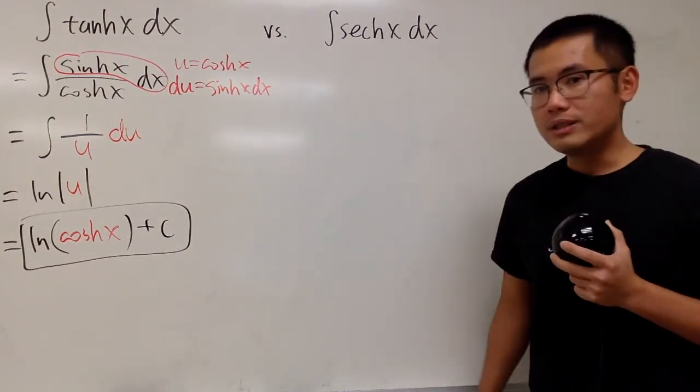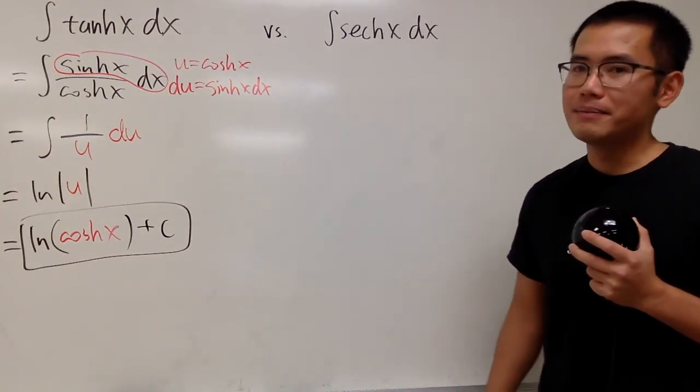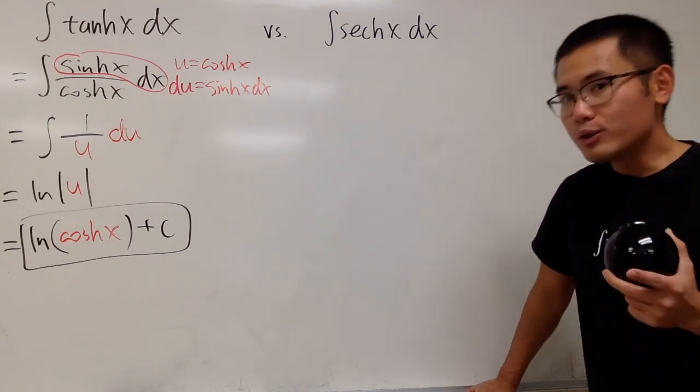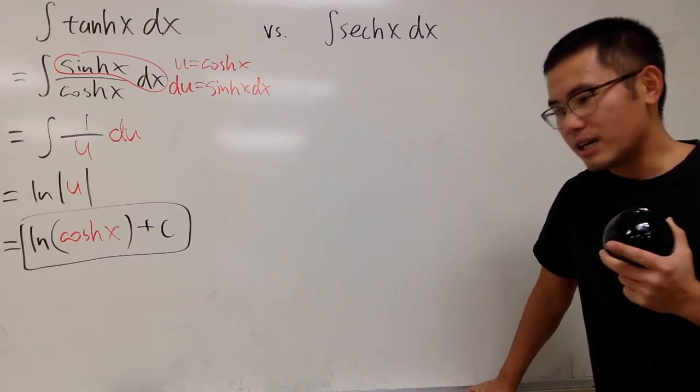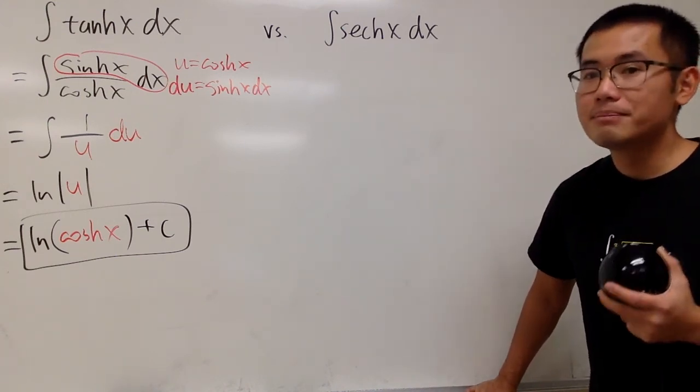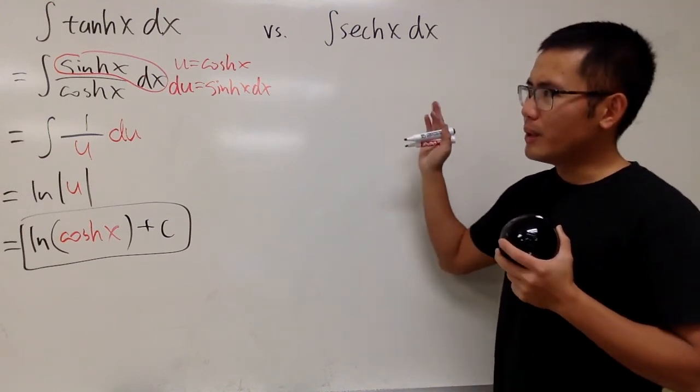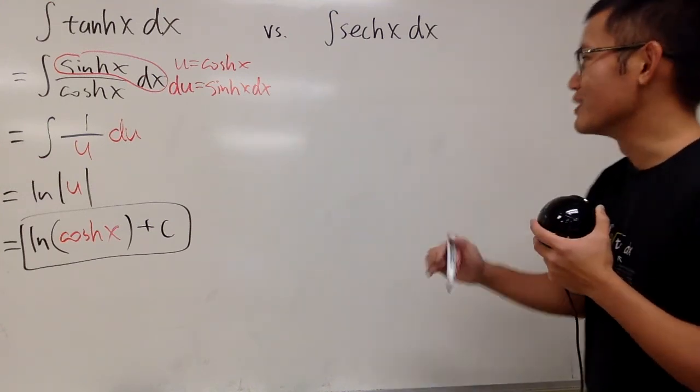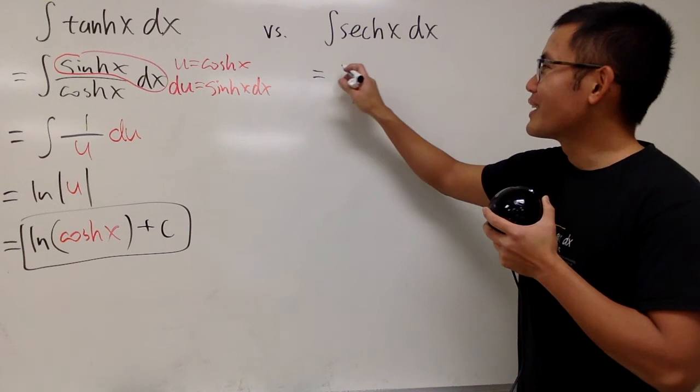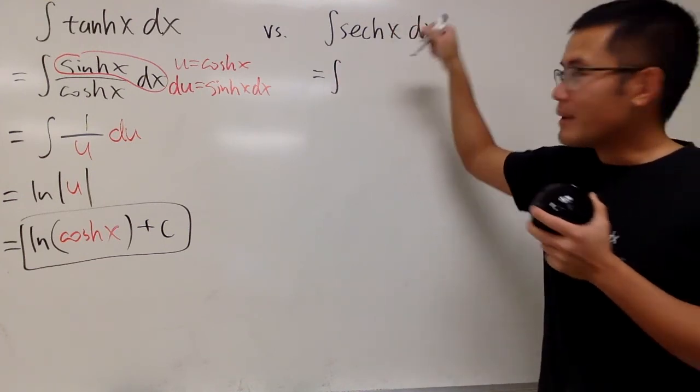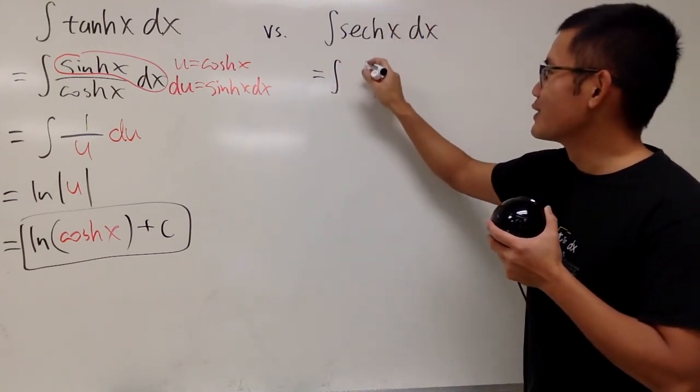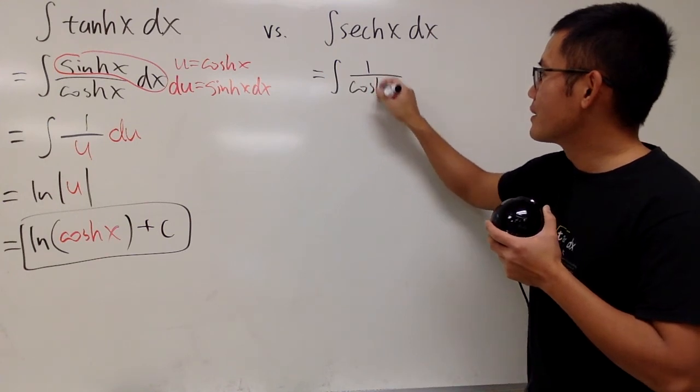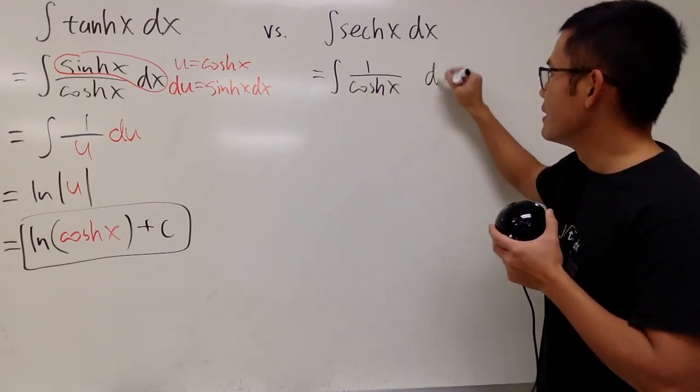Now, let's have a look with the hyperbolic version of the secant. You might want to try with the way that you would do it with the integral of secant x, but for this one, we are going to approach like that. Anyway, this right here is the integral. For the hyperbolic secant, this is just 1 over cosh x, that's okay, dx.